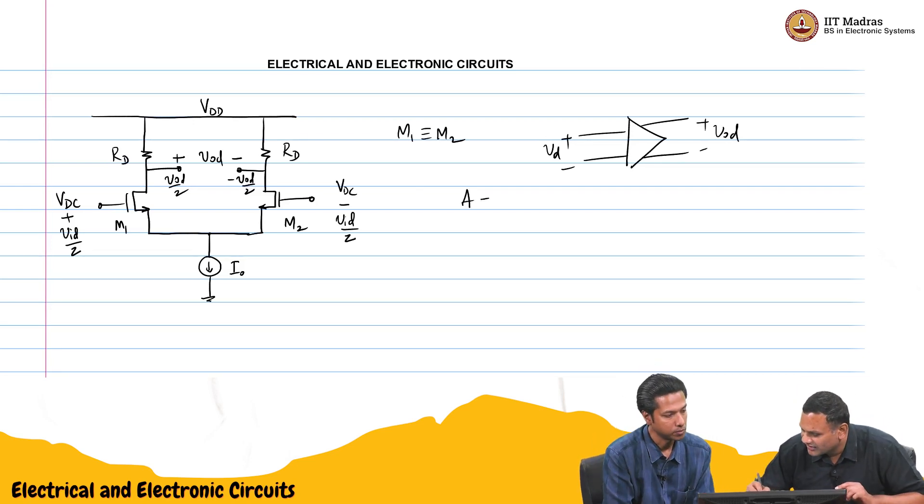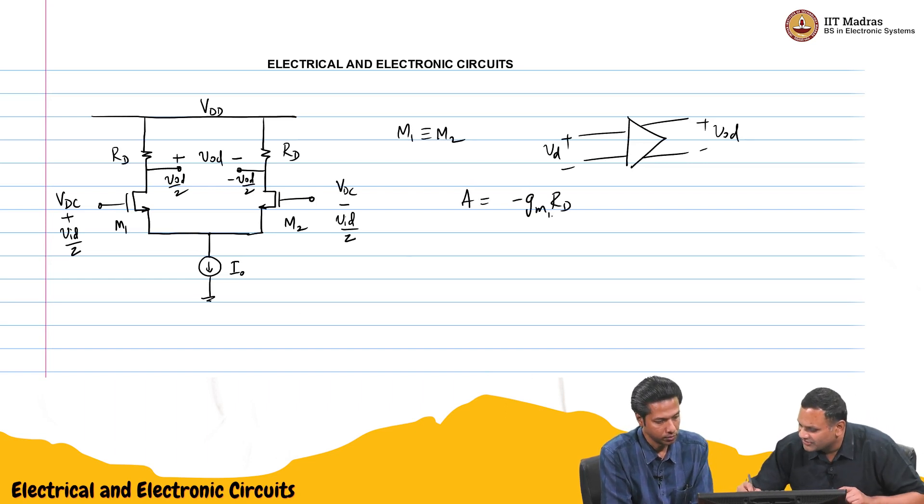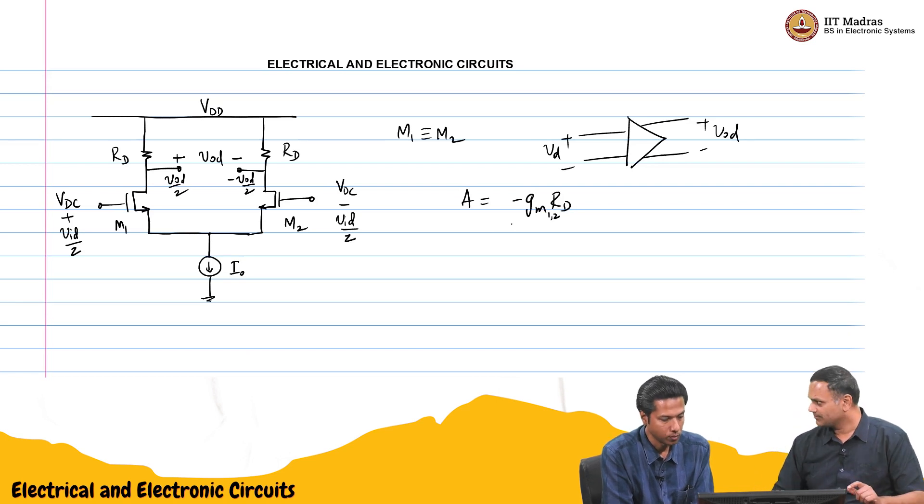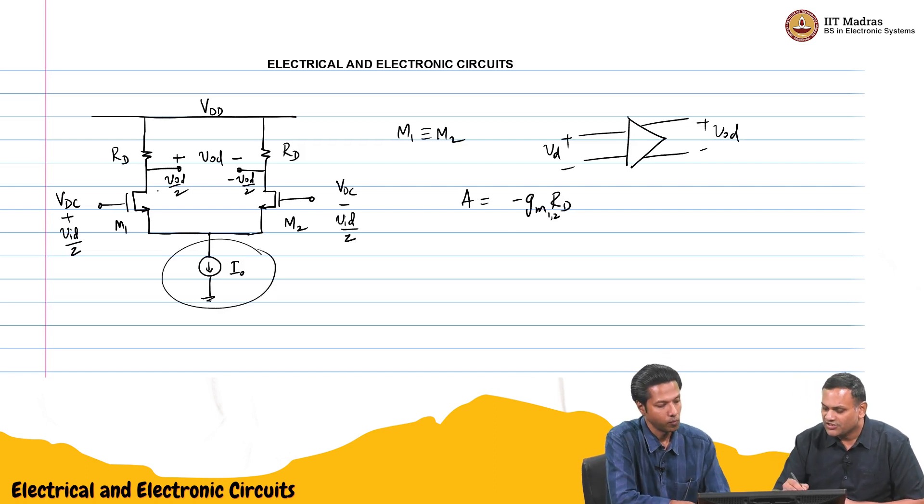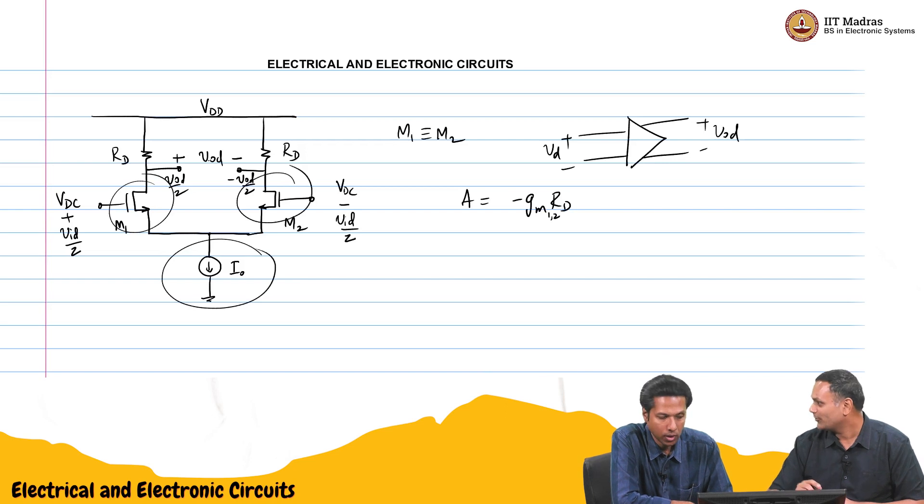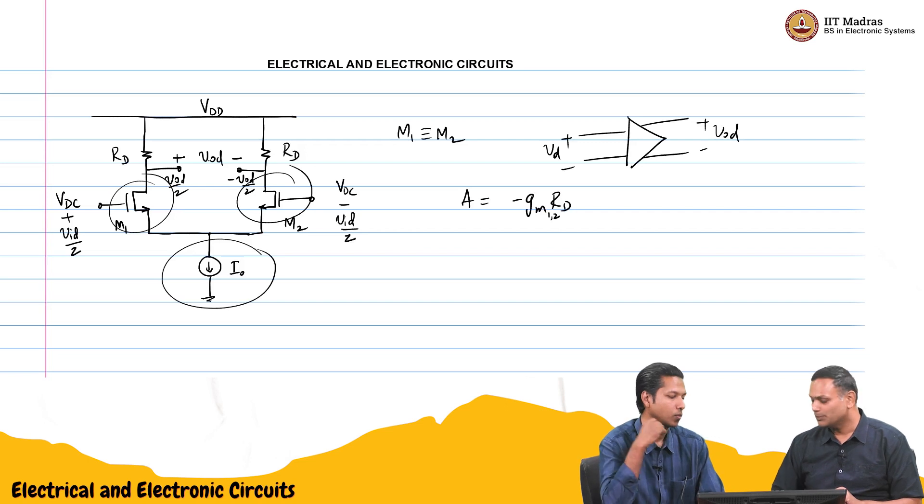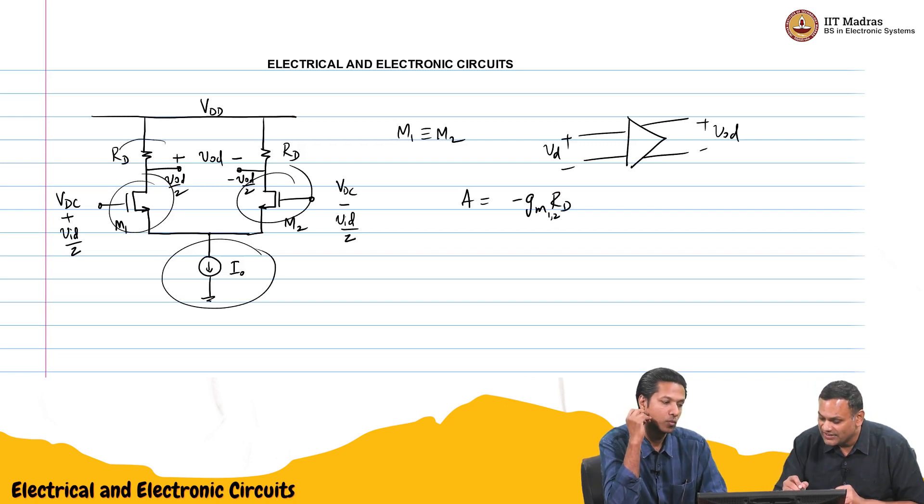So, the gain of this amplifier will be minus GMRD. Where GM is either GM of 1 or GM of 2, either M 1 and M 2 are identical. And we know many things. I think if this current source is I naught. Each of these devices is I naught by 2. So, once you know this current, you know the bias current of M 1 and M 2.